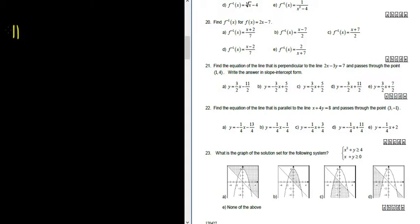Let's work out problem number 22. Find the equation of the line that is parallel to the line x plus 4y equals 8. So we have x plus 4y equals 8. Our line is parallel to this line and passes through the point 3, negative 1.